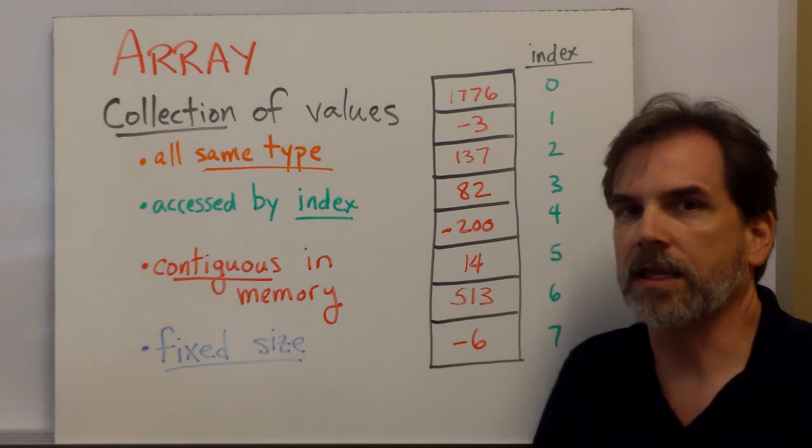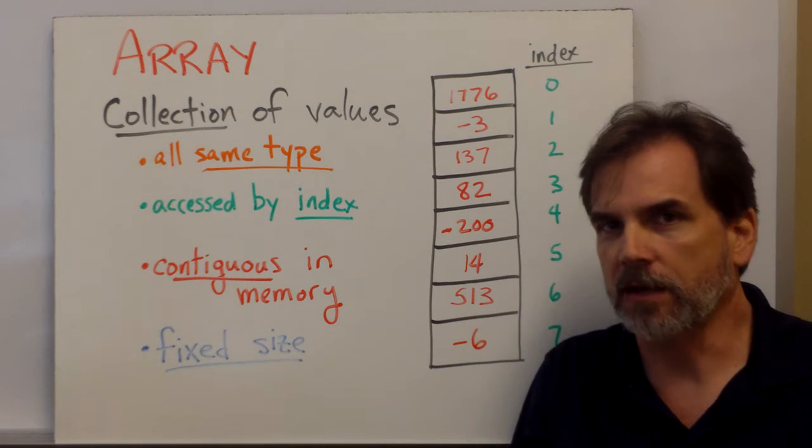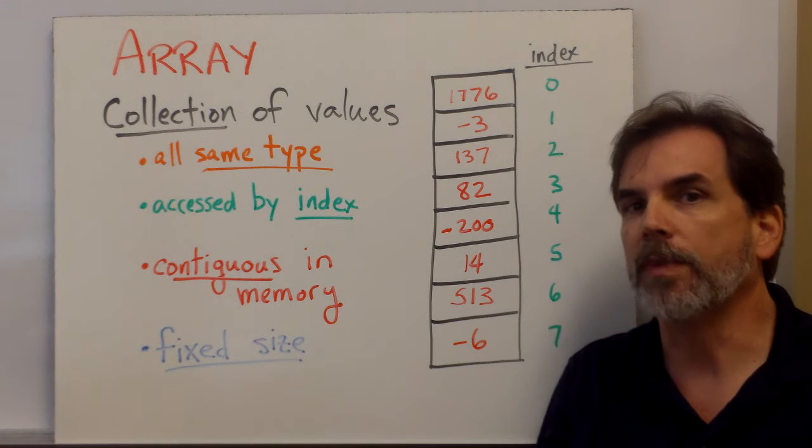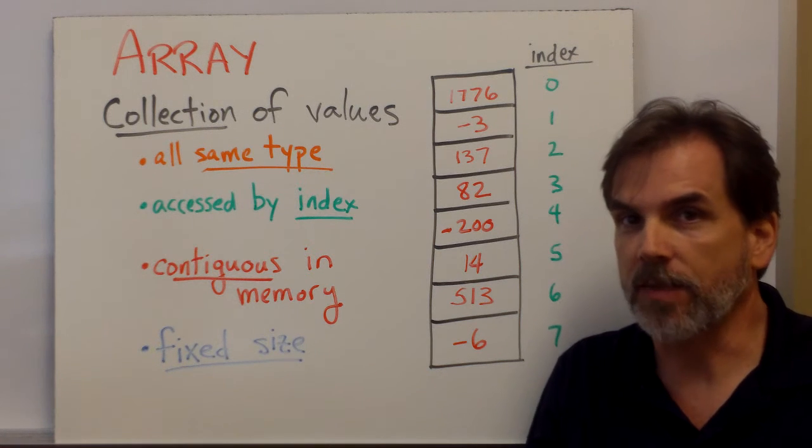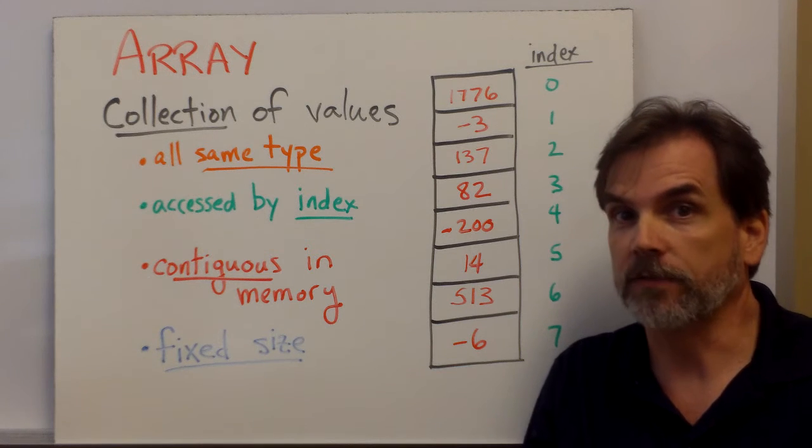And finally, an array is fixed size. So when we allocate an array, we tell how big we want that array to be, and that never changes. That's the amount of data we're given, and that's what we have to live with.